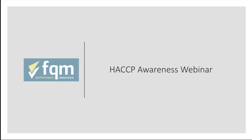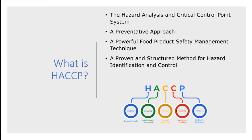So what is HACCP? HACCP refers to a Hazard Analysis and Critical Control Point system. It's a preventative approach which is used in the food industry, predominantly used right from the start of the supply chain through the distribution to the point of the consumer eating the product. It's a powerful product safety management technique and a proven structured method for hazard identification and control.